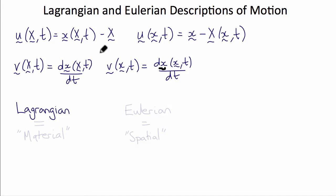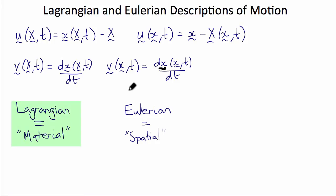So again, when we write a description of motion as a function of original coordinates that label material particles, we call this a Lagrangian or material description. When we write a description of motion as a function of spatial coordinates through which different particles are passing at different times, this is the spatial or Eulerian view of a fixed observer.